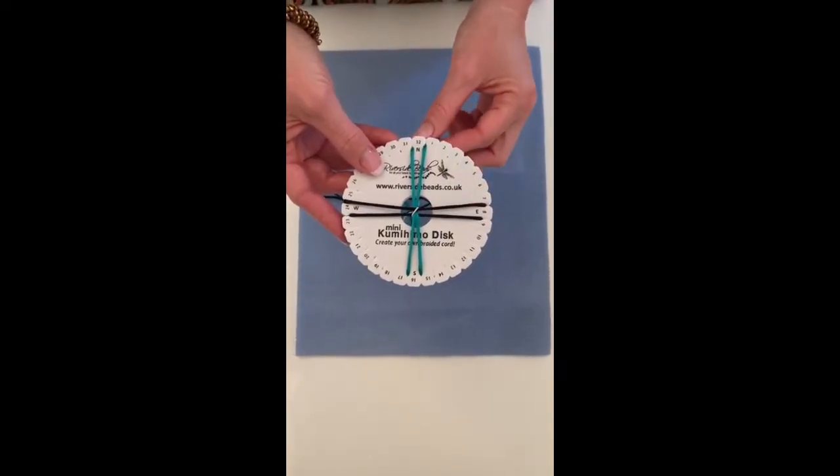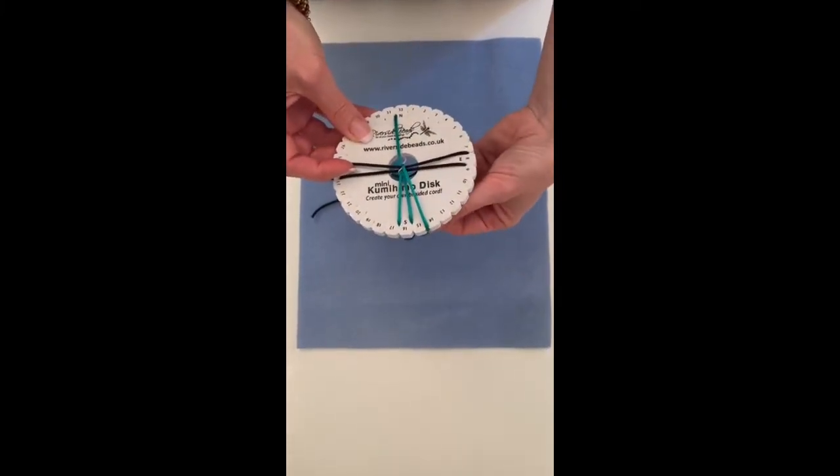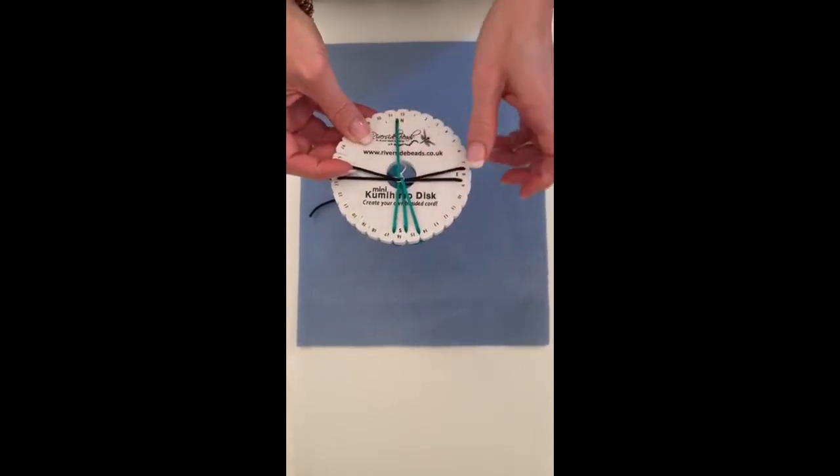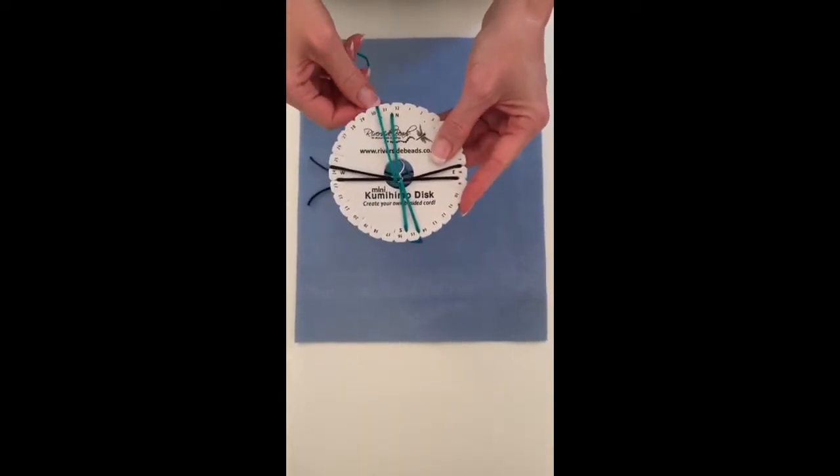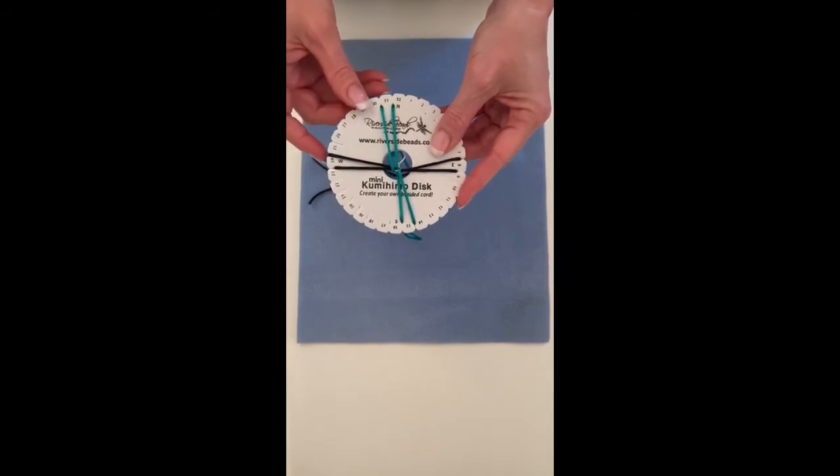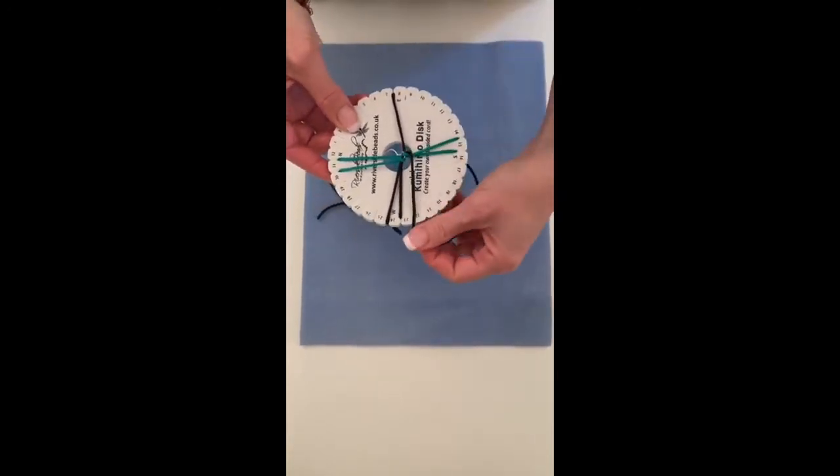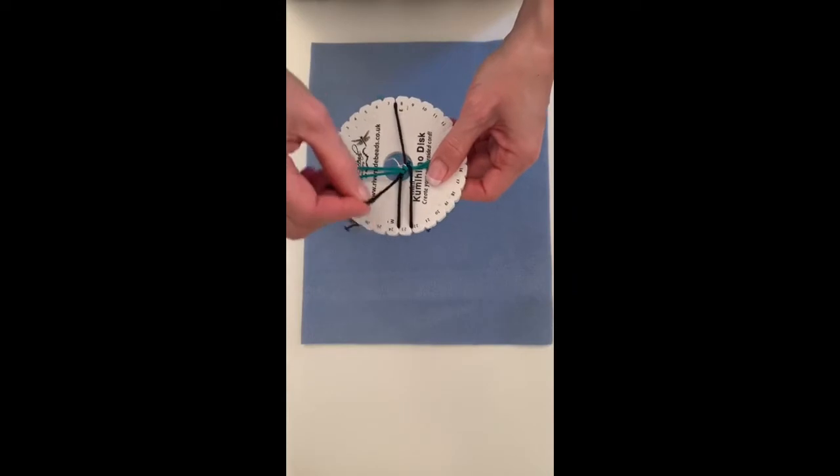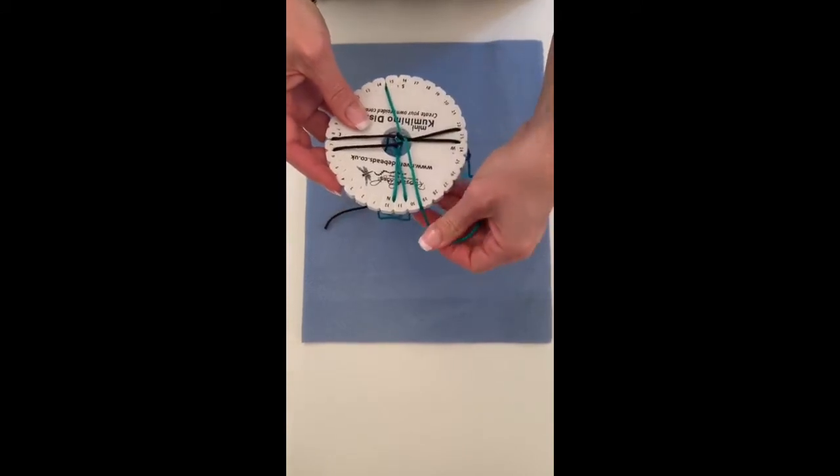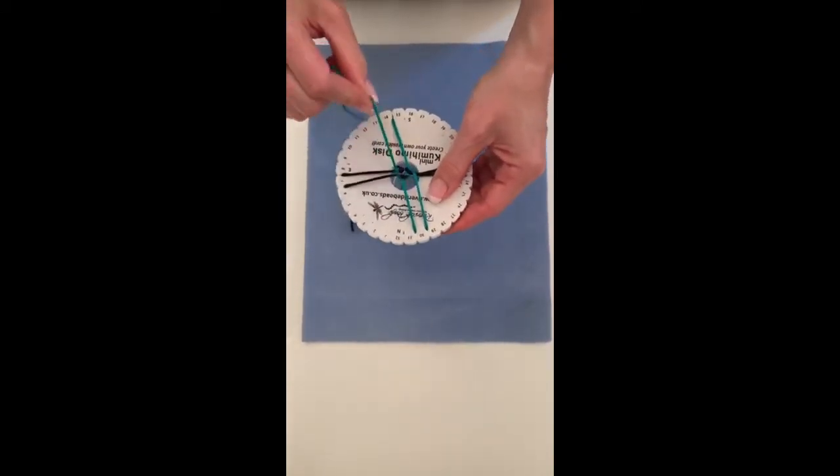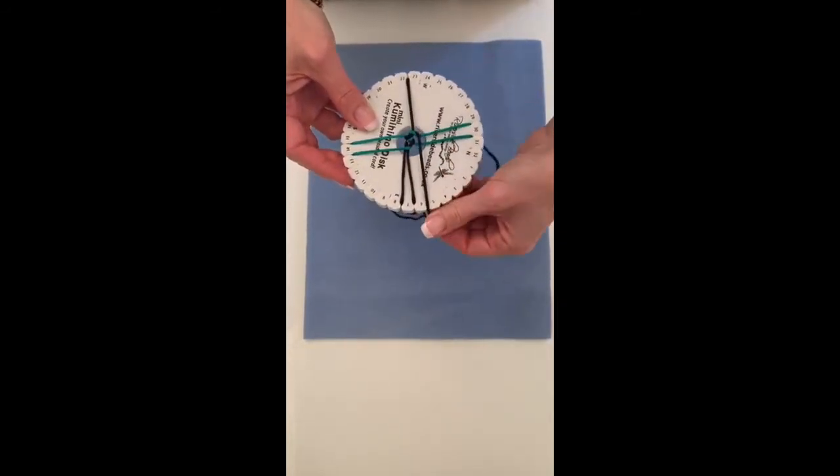To braid your kumihimo, take your top right cord from underneath the disc and take it down to the bottom right slot to the right of the other two cords. Then take your bottom left cord out from underneath and up to the top left to the left of the cord up there. So that's your first moves. Quarter turn it anti-clockwise and repeat. So you take your top right cord down and your bottom left cord up. Turn and repeat. Right down to right and left up to left. Quarter turn anti-clockwise and repeat.